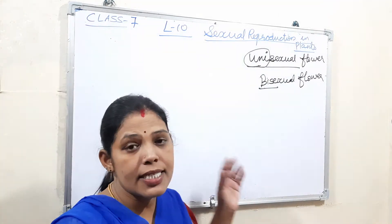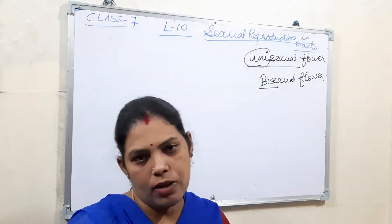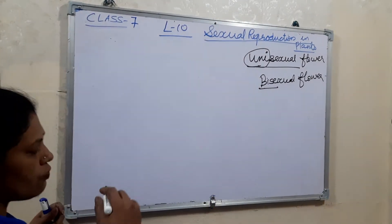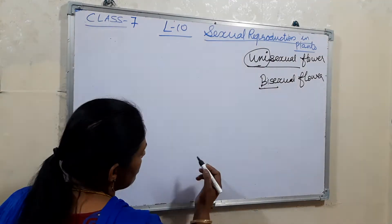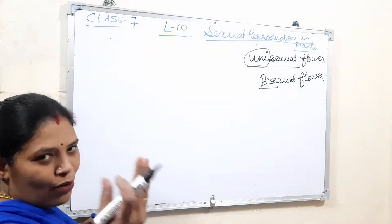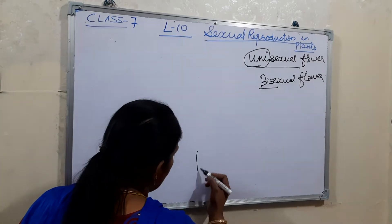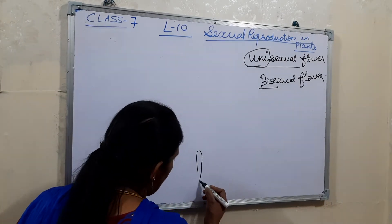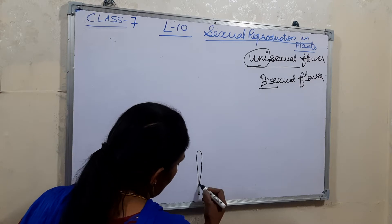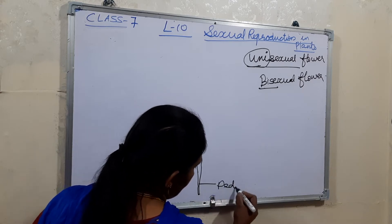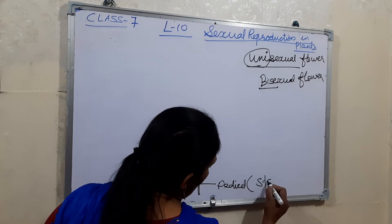I will now explain the structure of a flower. First we will look at the stalk of the flower. The stalk of the flower is known as the pedicel — the pedicel means the stalk of a flower.